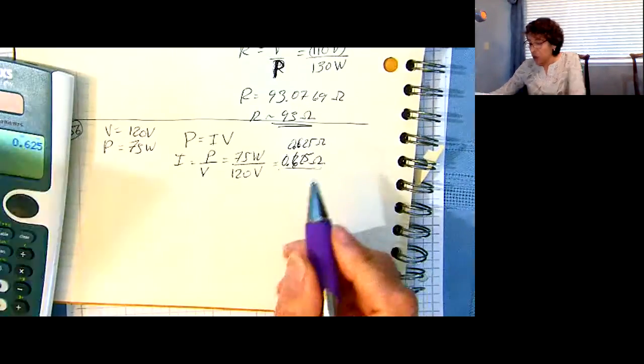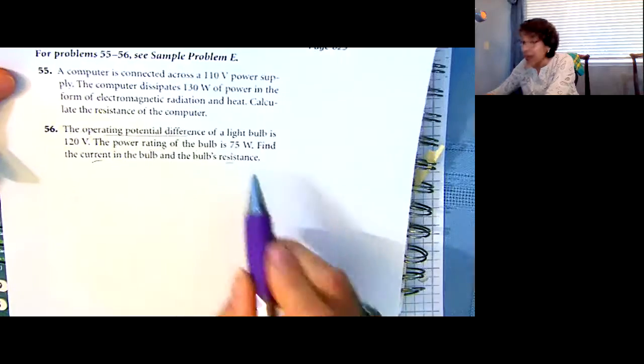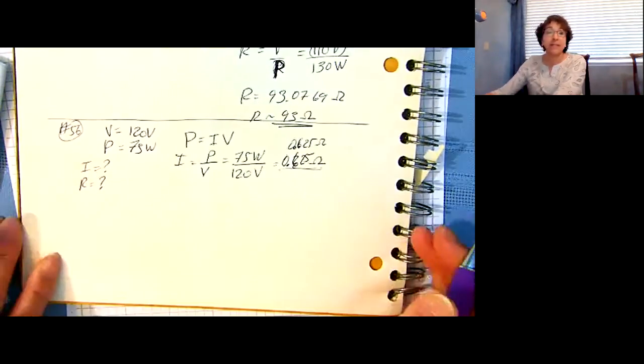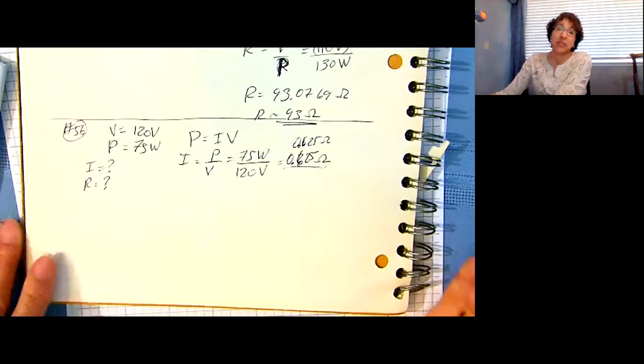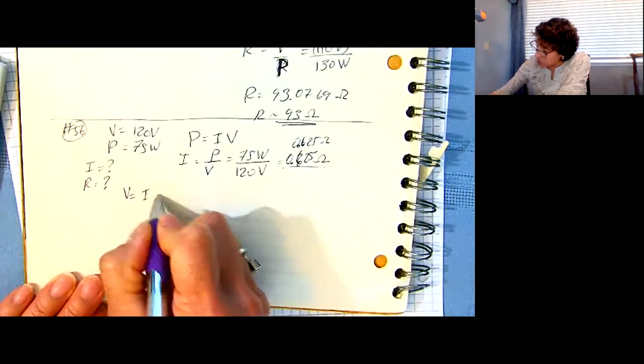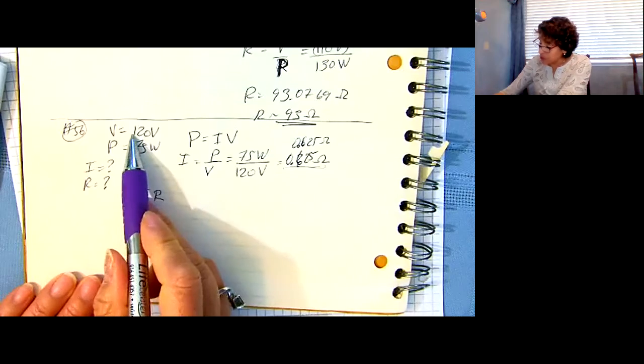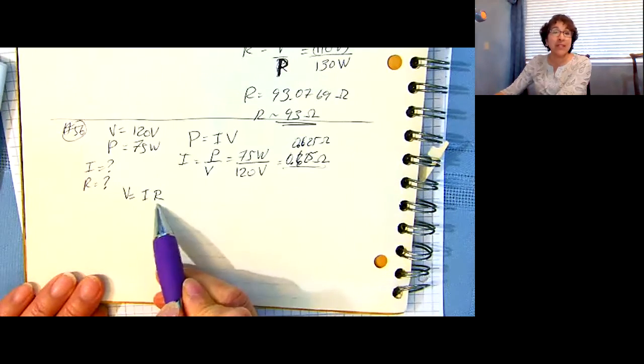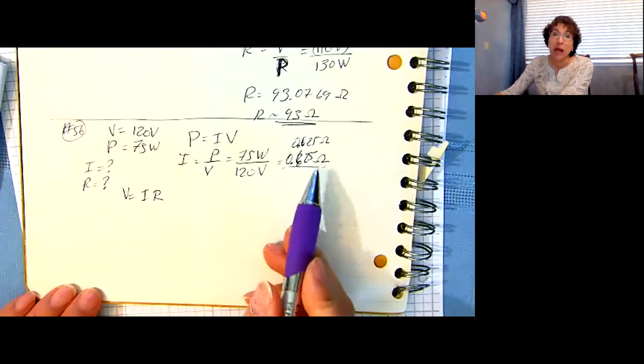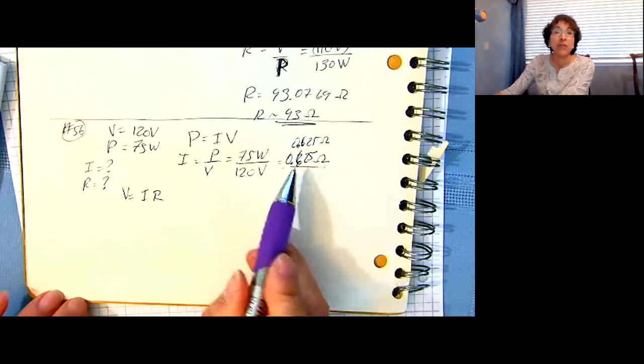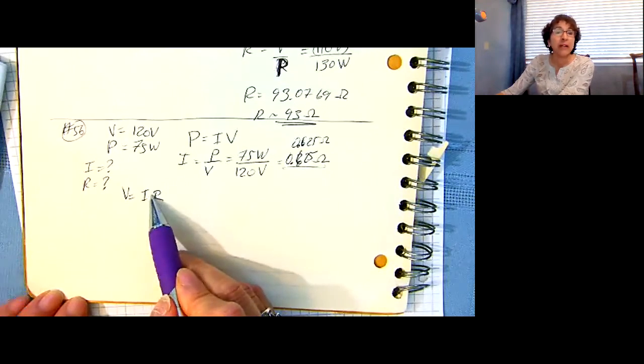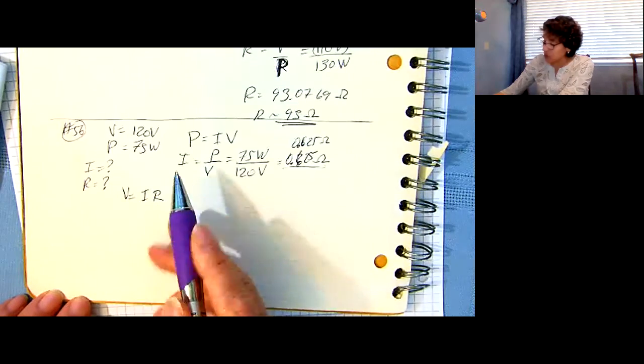And then it also asks for the resistance. They want to know what's the current, and they want to know what's the resistance. So you've got several different options. I happen to know V equals IR, that's one of my go-tos. I know the voltage, they want to know the resistance, and I just finished figuring out what the current is. Do not round off until the very end.